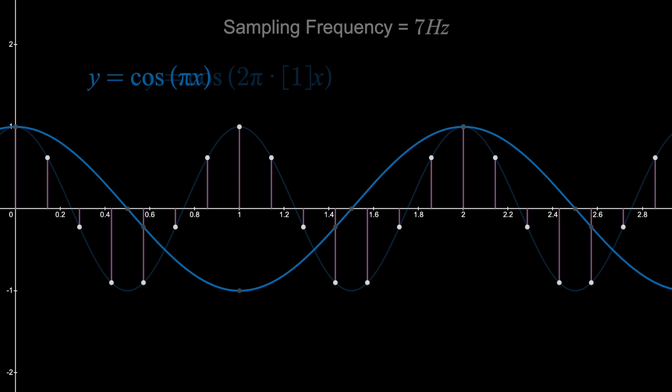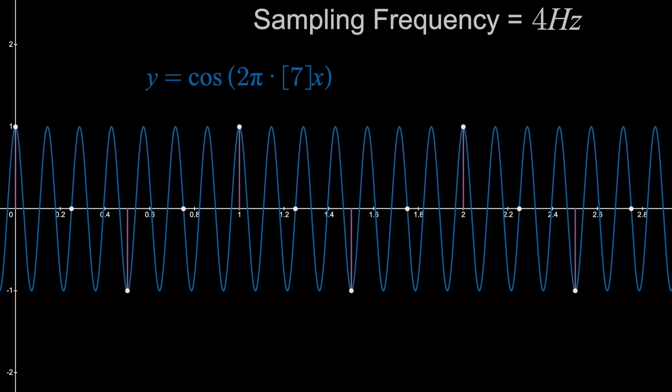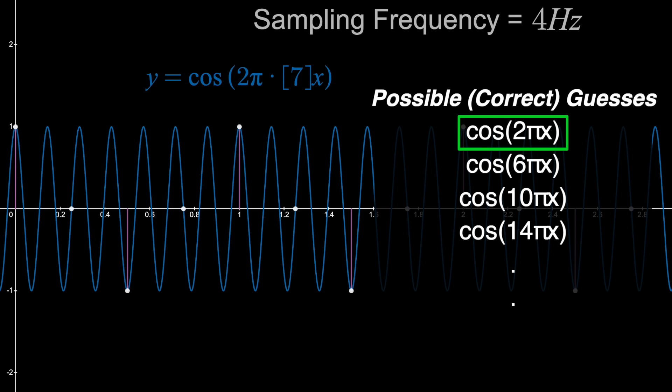Now, if we go back to our original 1 Hz signal and sample it a little slower, let's say 4 times per second, well now the same thing will happen, but at different frequencies. These samples correspond to our original 1 Hz signal, but also a 3 Hz signal will go through all these points. Same with 5 Hz, 7 Hz, and all odd numbers. You could guess any of these from the samples given. But 1 Hz is still the lowest.